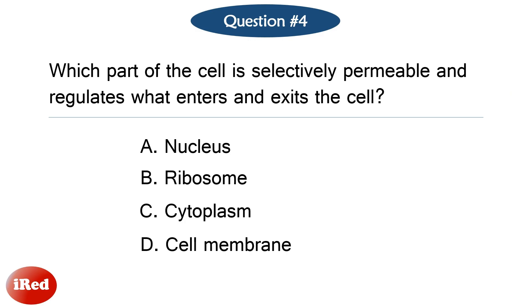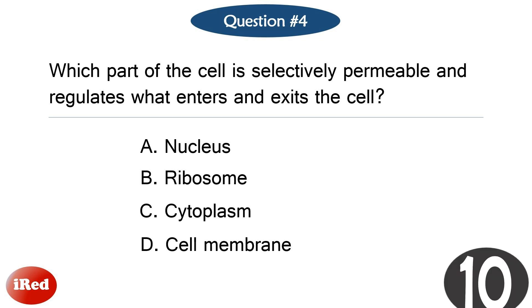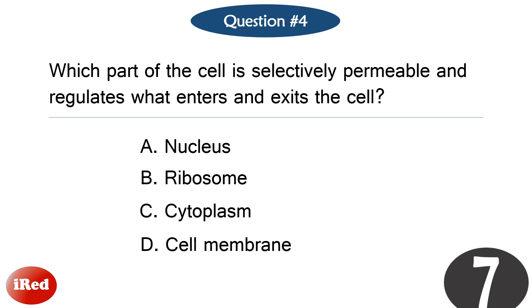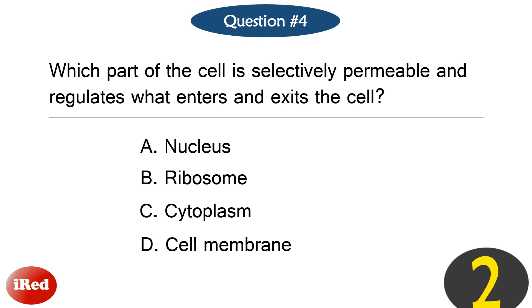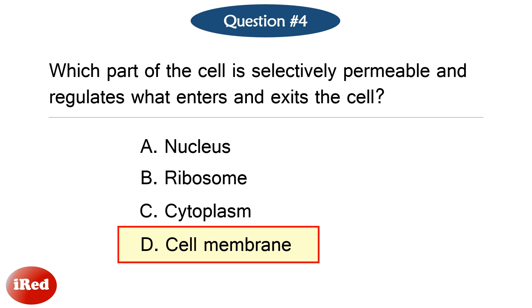Question number four. Which part of the cell is selectively permeable and regulates what enters and exits the cell? The correct answer is letter D, cell membrane.